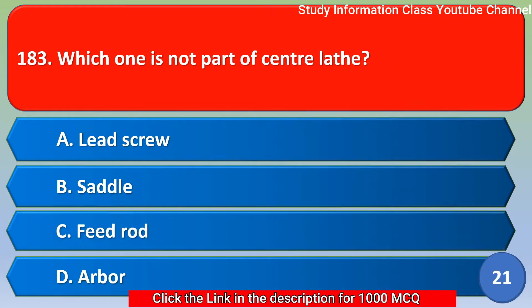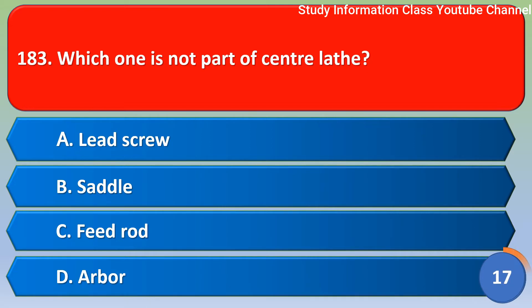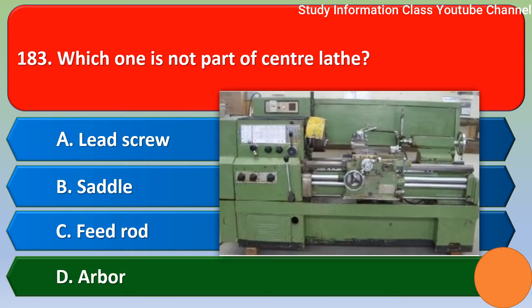Next question: which one is NOT a part of central lathe? Option A lead screw, option B saddle, option C feed rod, option D all of the above. The correct answer is option D — all of the above.